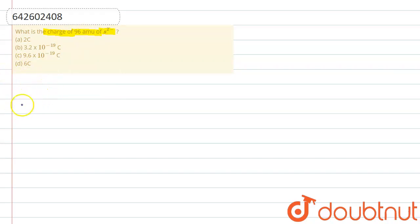Now atomic mass of sulfide ion is equal to 32 atomic mass units.